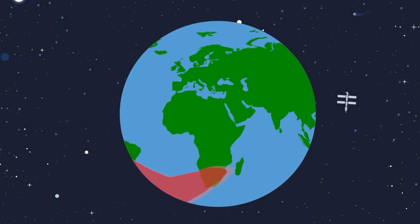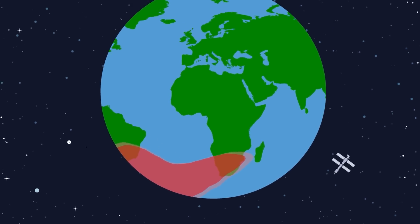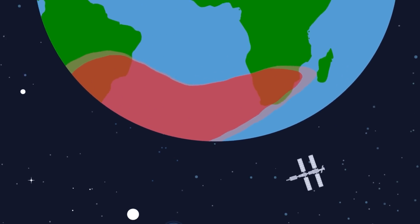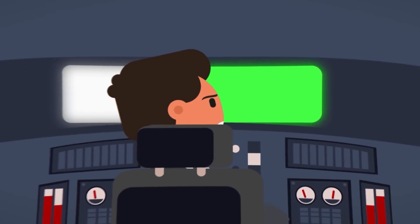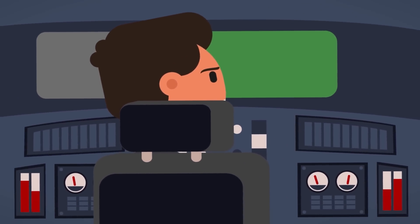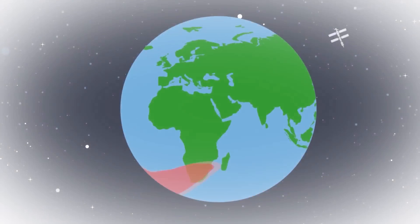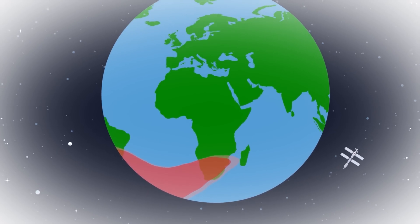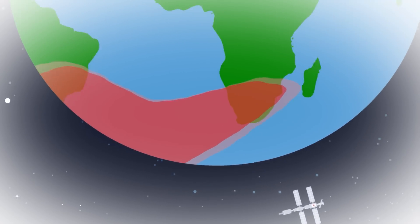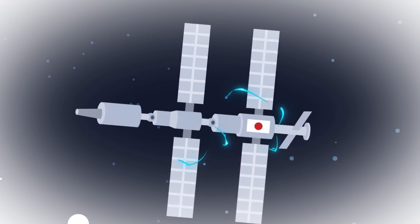For now, the greatest danger that the SAA possesses is to low-Earth satellites, which frequently pass through the anomaly. They must be careful to shut down sensitive electronics or suffer serious consequences, such as the Japanese satellite that destroyed itself when charged particles slipping through the weakened magnetic field damage some of its electronics.